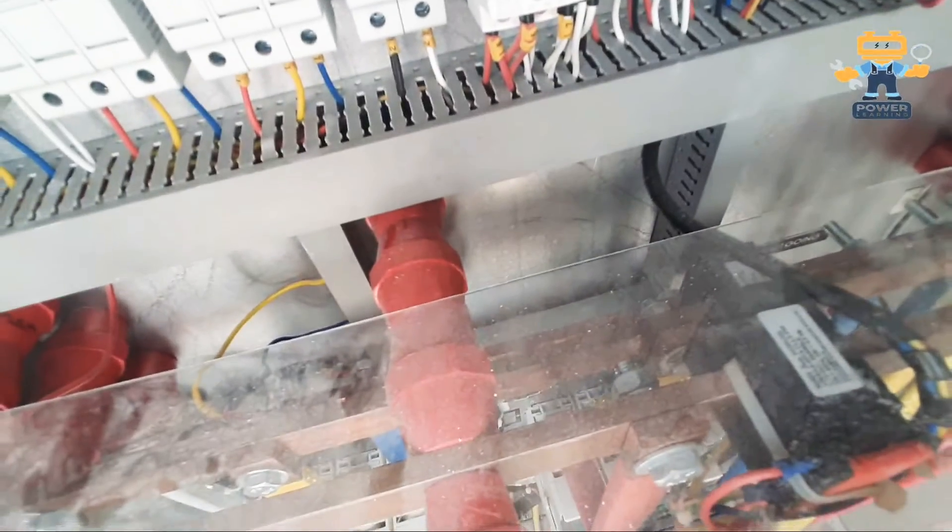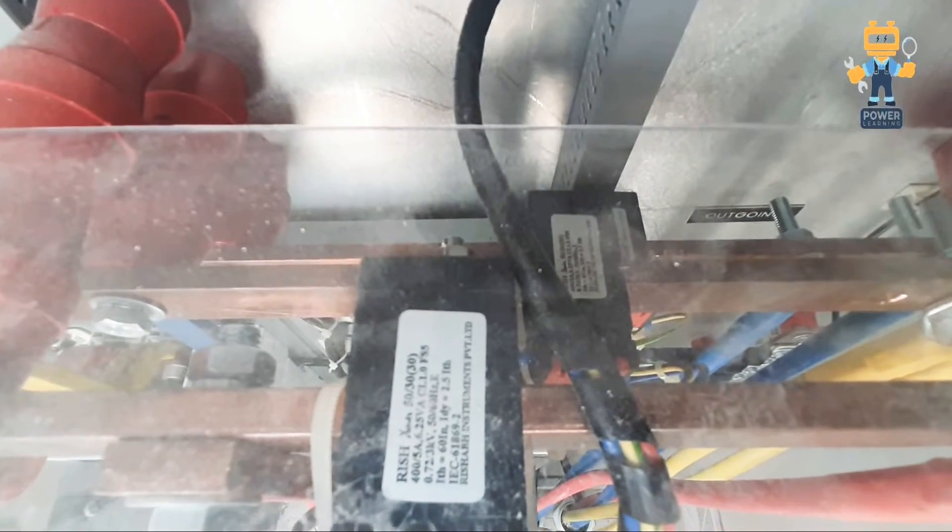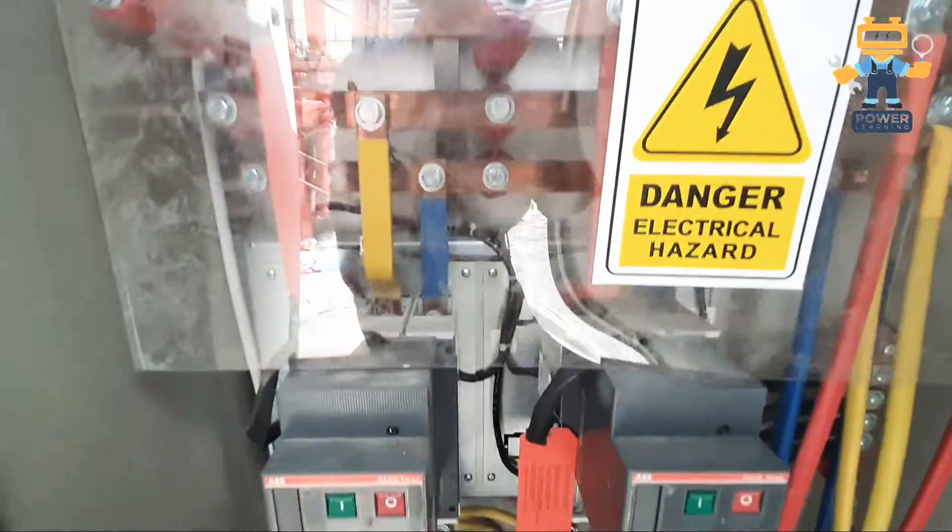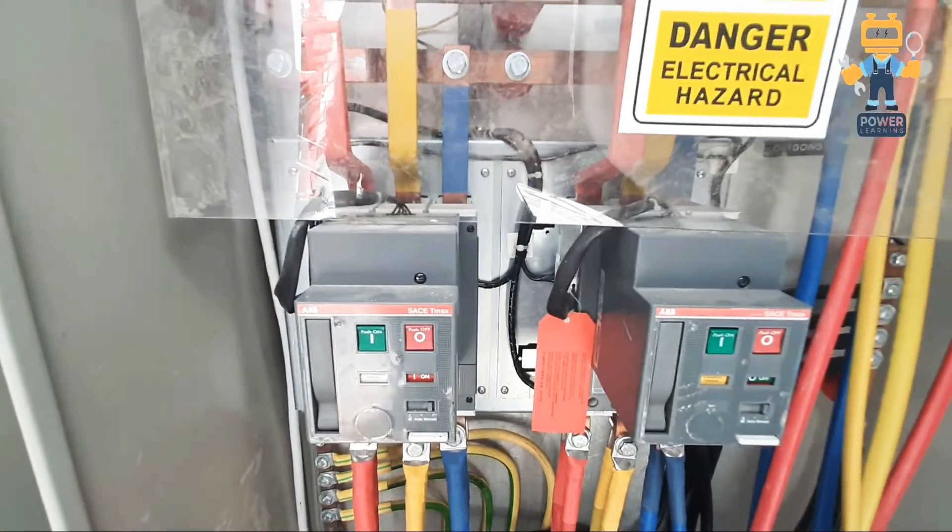Here we have our three CTs. CTs we are using in the panel for current measuring. We are measuring the bus bar current, the load current, with the help of these CTs and giving us readings on our digital multimeter.